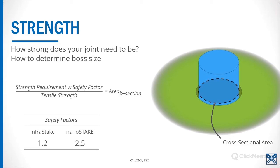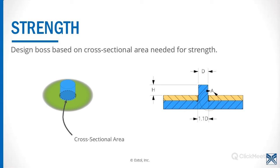Let's talk about strength and how to determine your boss size. How strong does your joint need to be? We take the strength requirement of the given staking location — say 100 pounds — and multiply that by a safety factor. For Infrastake we recommend 1.2; for Nanostake, 2.5. Then we take that number and divide it by the tensile strength of the material. For example, with polypropylene the tensile strength is about 4,800 PSI. So we would take 100, multiply by a safety factor of 1.2 for Infrastake, divide by 4,800, and that gives us a cross-sectional area of 0.025 square inches. We then take that cross-sectional area and do the math backwards to get our boss dimensions.